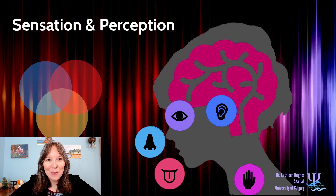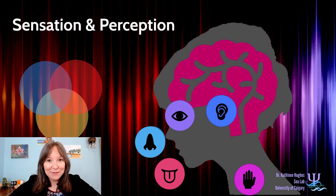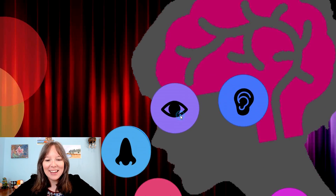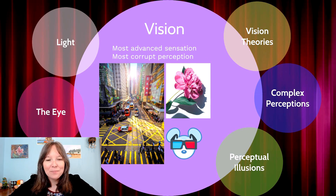Welcome back to unit 4. We're still talking about sensation and perception, and now we're going to move into talking about our most advanced but most corrupt sensation, and that is our sense of vision in the eye.